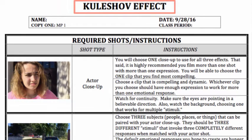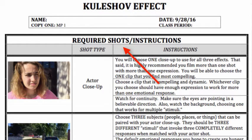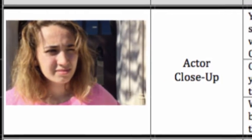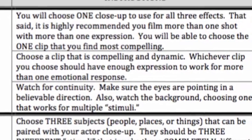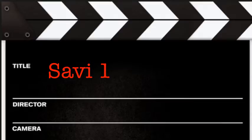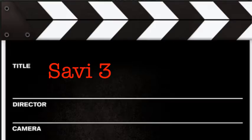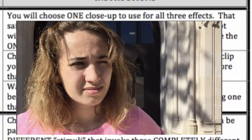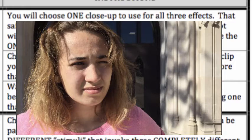To create your own Kuleshov Effect video, you'll need a number of shots and may want to consider some transitions and special effects. The first shot you need is your actor close-up. Choose one close-up to use for all three effects — it is highly recommended you film more than one shot with more than one expression so you can choose the most compelling clip. The clip should have enough expression to work for more than one emotional response. Watch for continuity: make sure the eyes are pointing in a believable direction, and watch the background, choosing one that works for multiple stimuli.